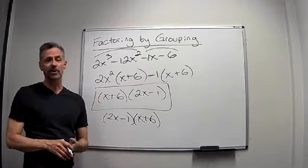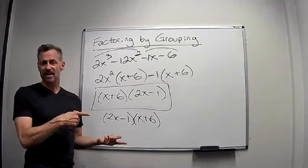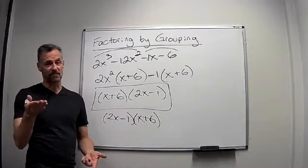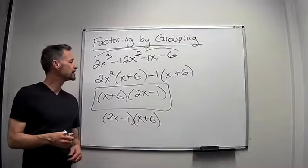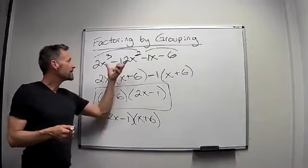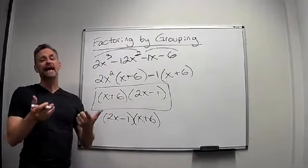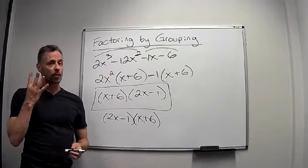There is one method of factoring trinomials called the AC method. I've got a video on that, but I prefer another video of mine called the illegal move method. But anyway, that's factoring by grouping and it's used to factor when you have four terms.